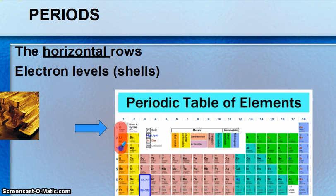So there's seven periods. One, two, three, four, five, six, and seven. The rows going across.